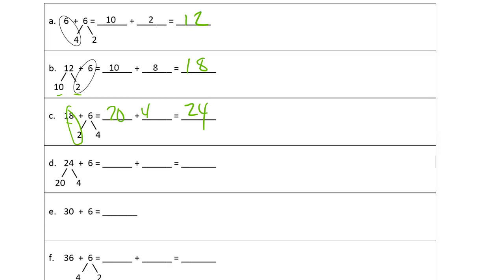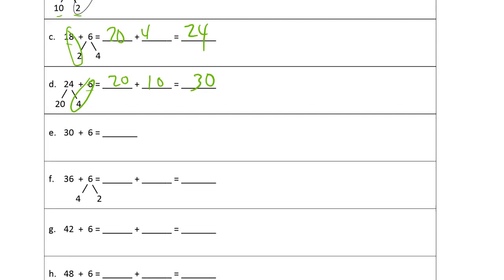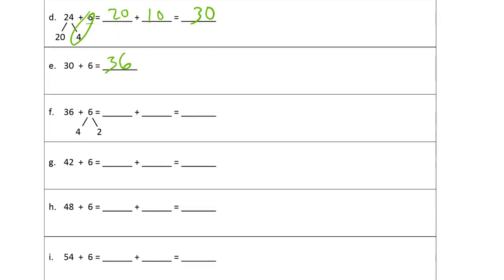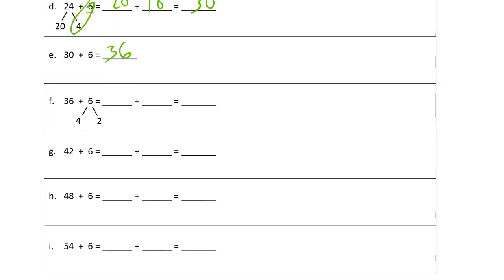Twenty plus four is twenty-four. Next, we're adding six again to twenty-four — there's a four and a six, and that makes ten, so we're looking at twenty plus ten, which is thirty. Then thirty plus six — don't even think about that one, it's thirty-six. Now we have thirty-six and we're adding six more, so we need four more to make ten. That next six is a four and a two, giving us forty plus two, which is forty-two.